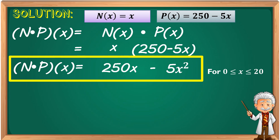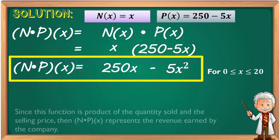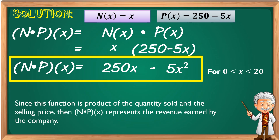This result is valid for 0 ≤ x ≤ 20. Since this function is the product of the quantity sold and the selling price, n times p(x) represents the revenue earned by the company.